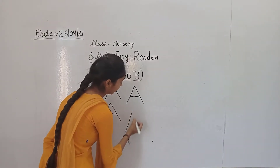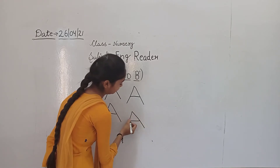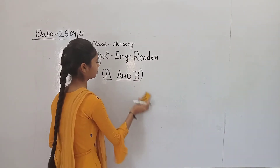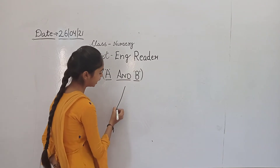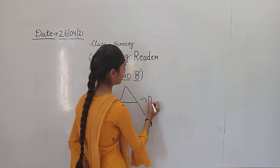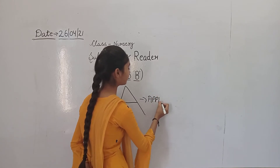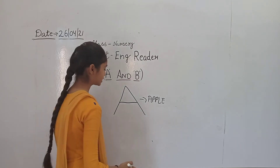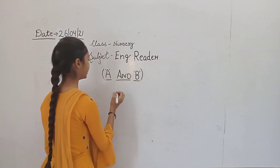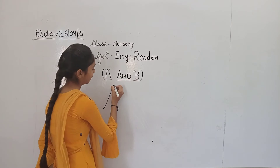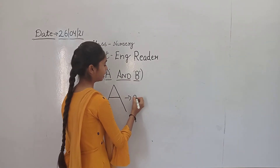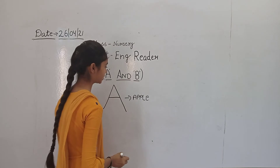Next, this is sleeping line. This is slanting line. This is sleeping line. What is A for? A for apple. Apple means save. What is A for? This is slanting line. This is sleeping line. What is A for? A for apple. Apple means save. Okay?